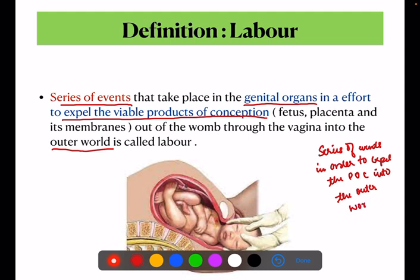What does our product of conception include? Product of conception means the fetus, along with the placenta and its membranes. The placenta and its membranes are both included.